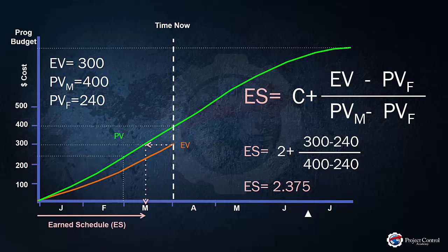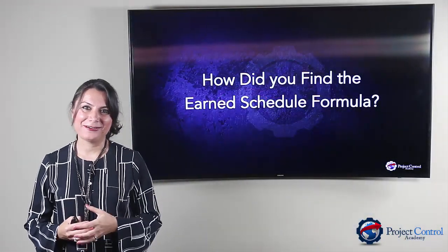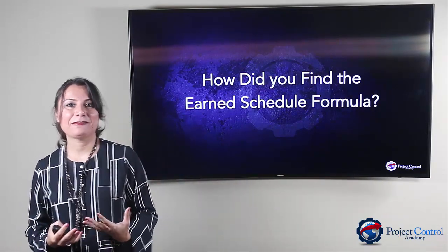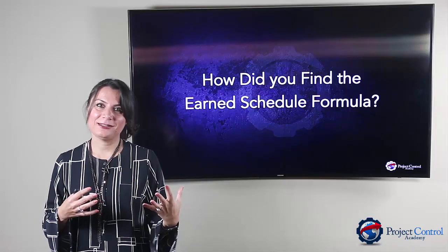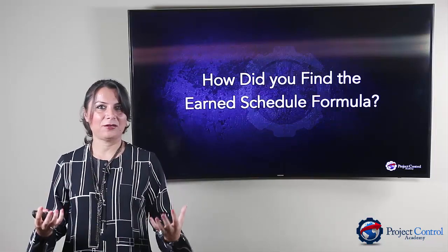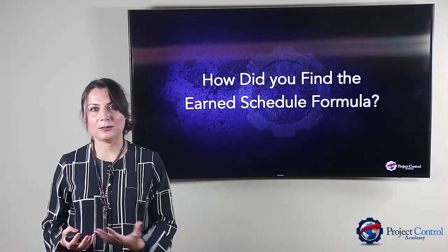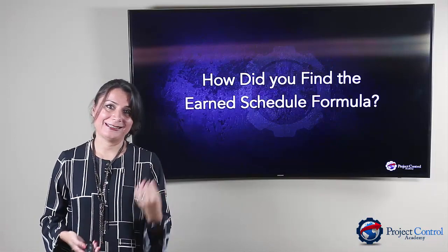I hope now you have a better idea about Earned Schedule and how it's calculated. I hope I haven't confused you with the metrics and formulas. It's a very simple mathematical calculation. As long as you understand how Earned Schedule is calculated, you should be fine. It might look a bit complex at first glance, but if you understand how the formula is derived, you will be fine. You might need to watch this video several times, and as you could see, it's a simple math equation using trigonometry.